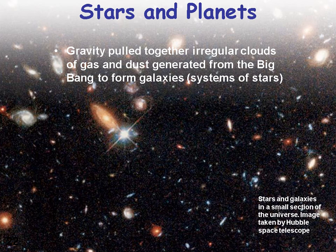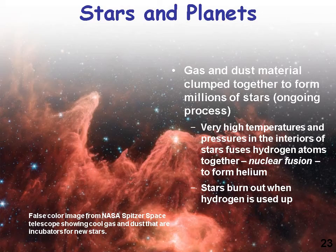Gravity pulled together irregular clouds of gas and dust generated from the Big Bang to form galaxies, or systems of stars. This picture from the Hubble telescope looks deep out into space, and all those objects are galaxies — thousands and thousands of galaxies made up of an untold number of stars. It's just amazing.